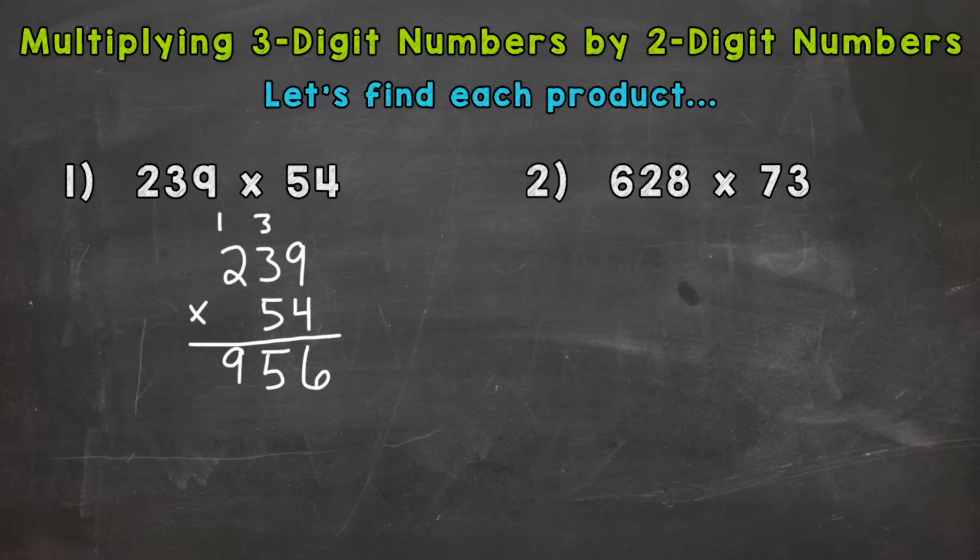But that's not our final answer, we still need to do 50 times 239. So we are done with this one that we carried and the three. I'm crossing those off just so we don't get confused with any other numbers we need to carry. And I'm also going to cross this four off because we are done with it. Now we're going to do 50 times 239. So we need a zero here because we're moving over to the tens place and that five has a value of 50. So we put a zero there to represent that.